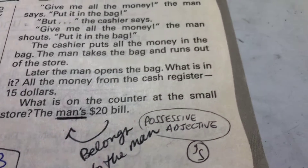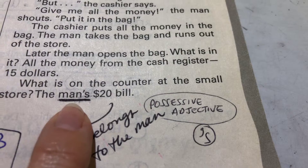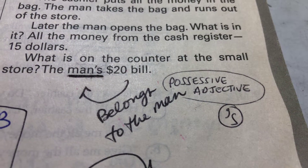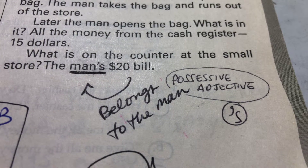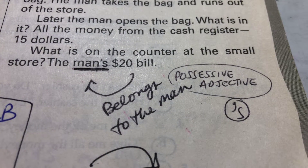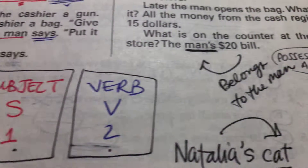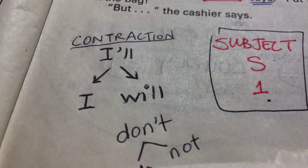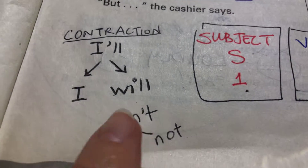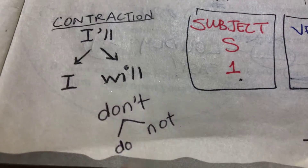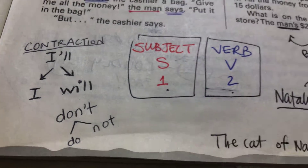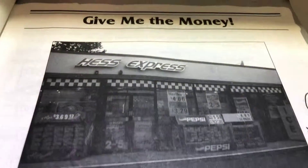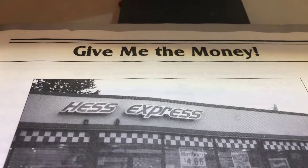Notice here when we talk about the word 'man's' — it's not a contraction. This is a possessive adjective with the apostrophe S. The twenty dollar bill belongs to the man, right? As opposed to other contractions, like 'I'll,' which is a contraction of 'I will,' and 'don't,' a contraction of 'do not.' Okay, so this is the story — 'Give Me the Money.' Bye.